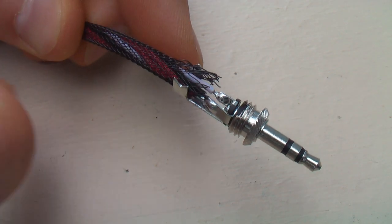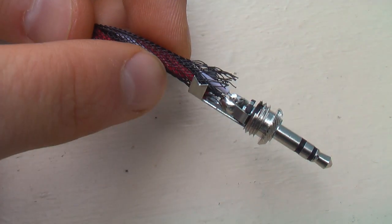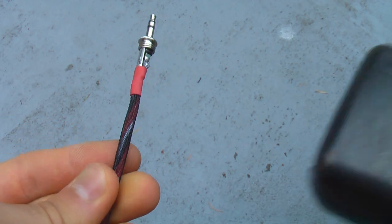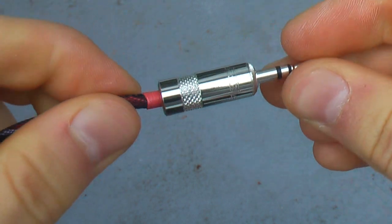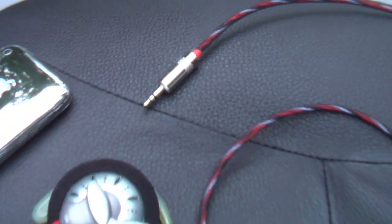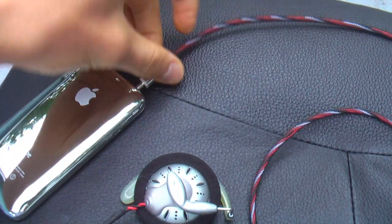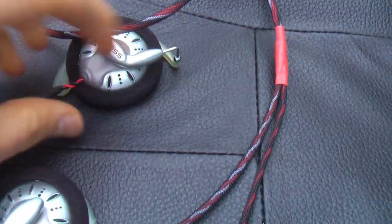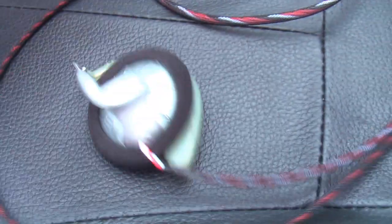Now that everything's all soldered together, we can use the built-in crimper to crimp everything down, including the plastic mesh. And with that, we're done. We've successfully rewired a set of headphones. So now to test them out. Here's the right one, and there's the left one. Sounded pretty good to me.